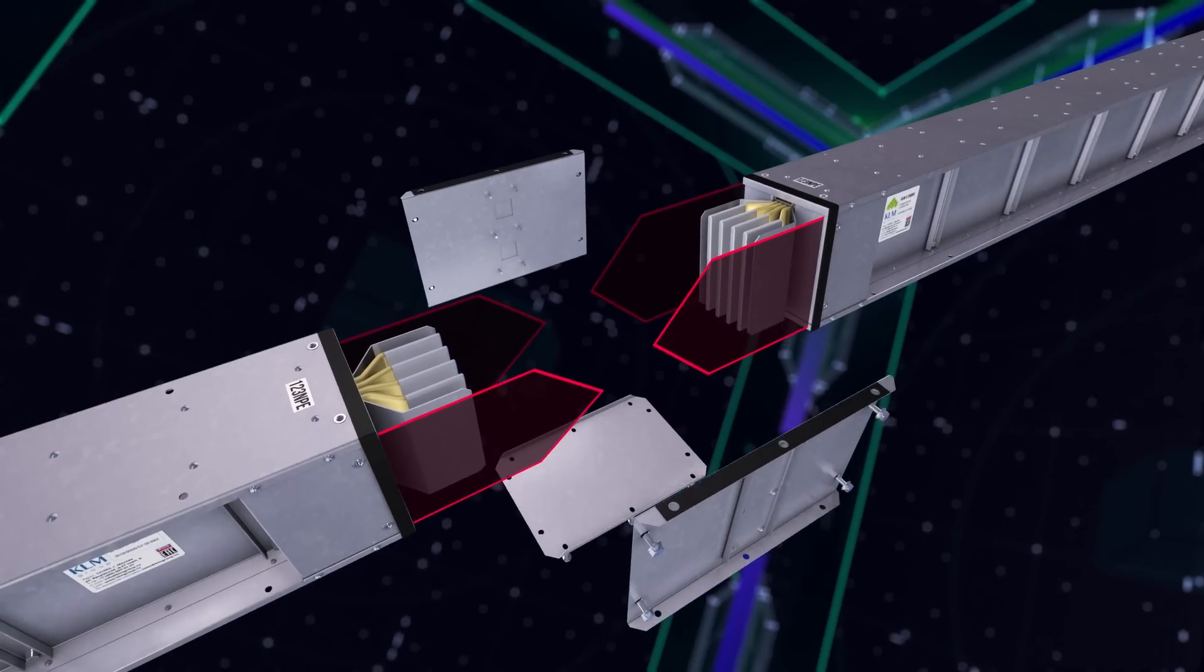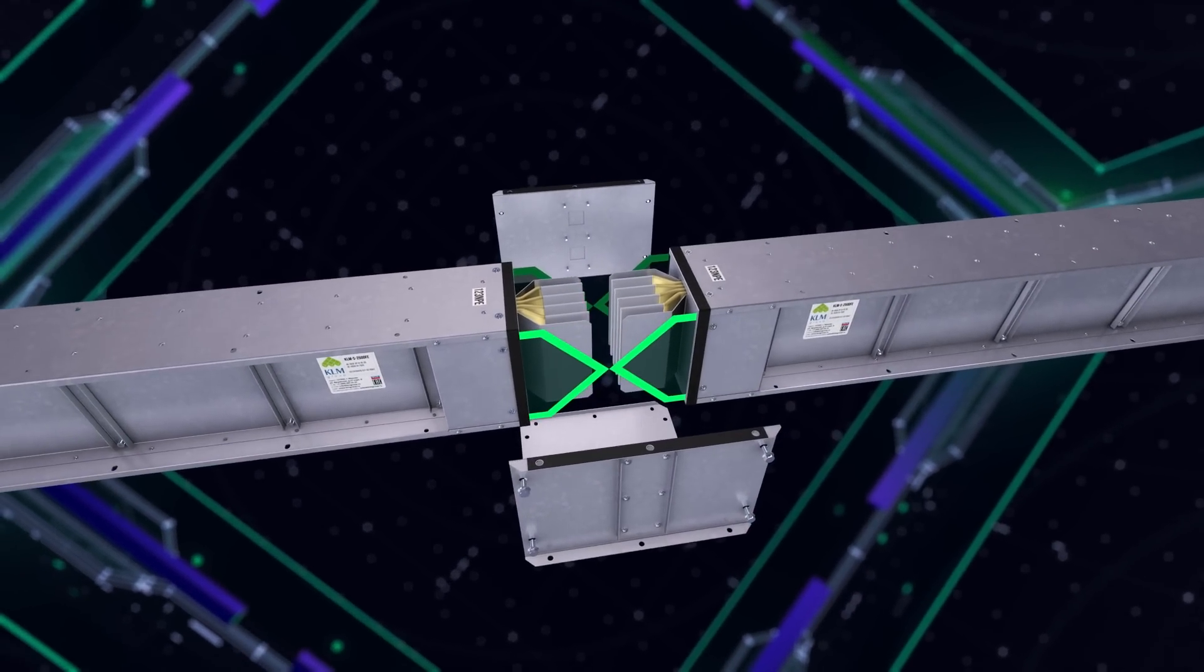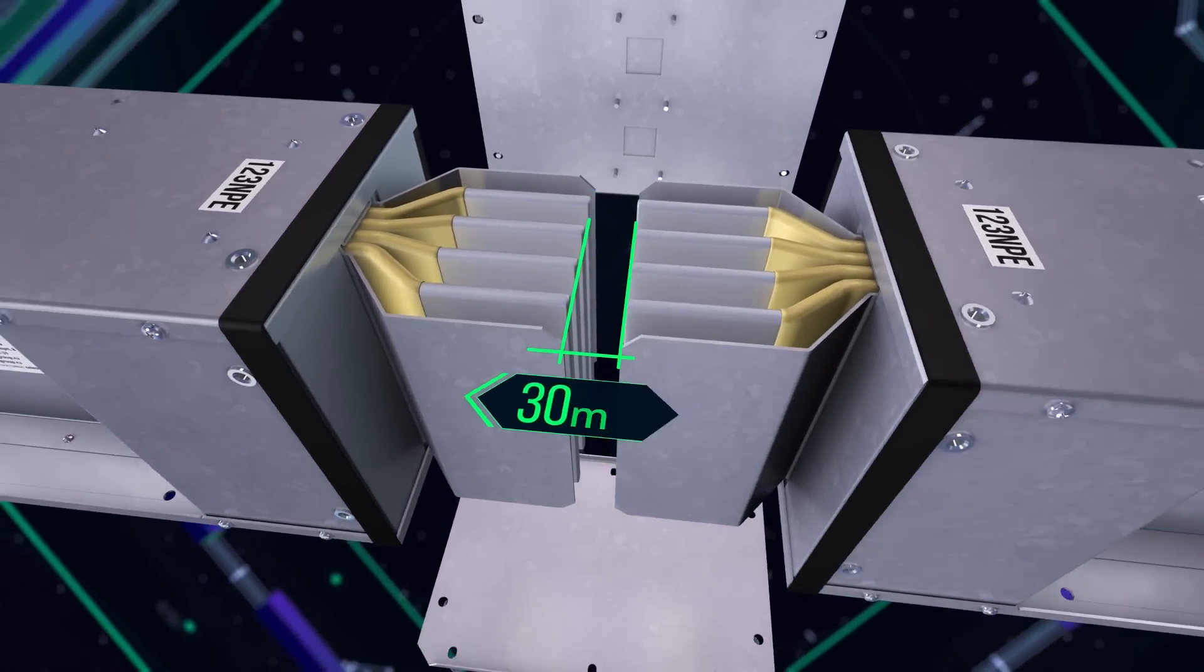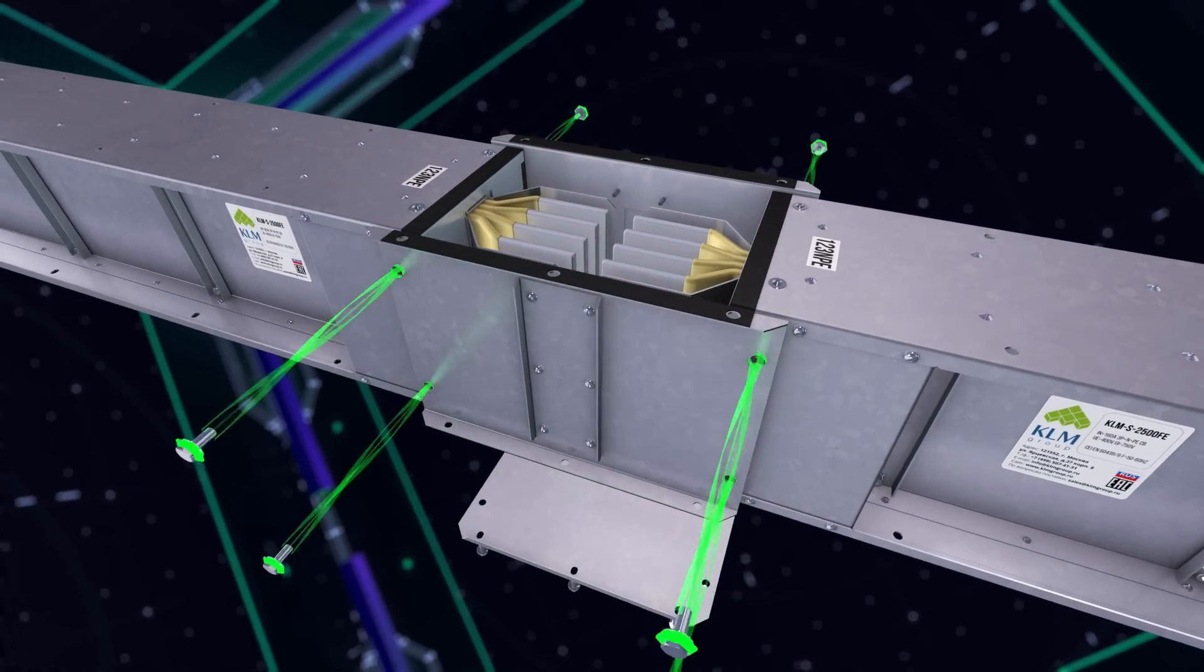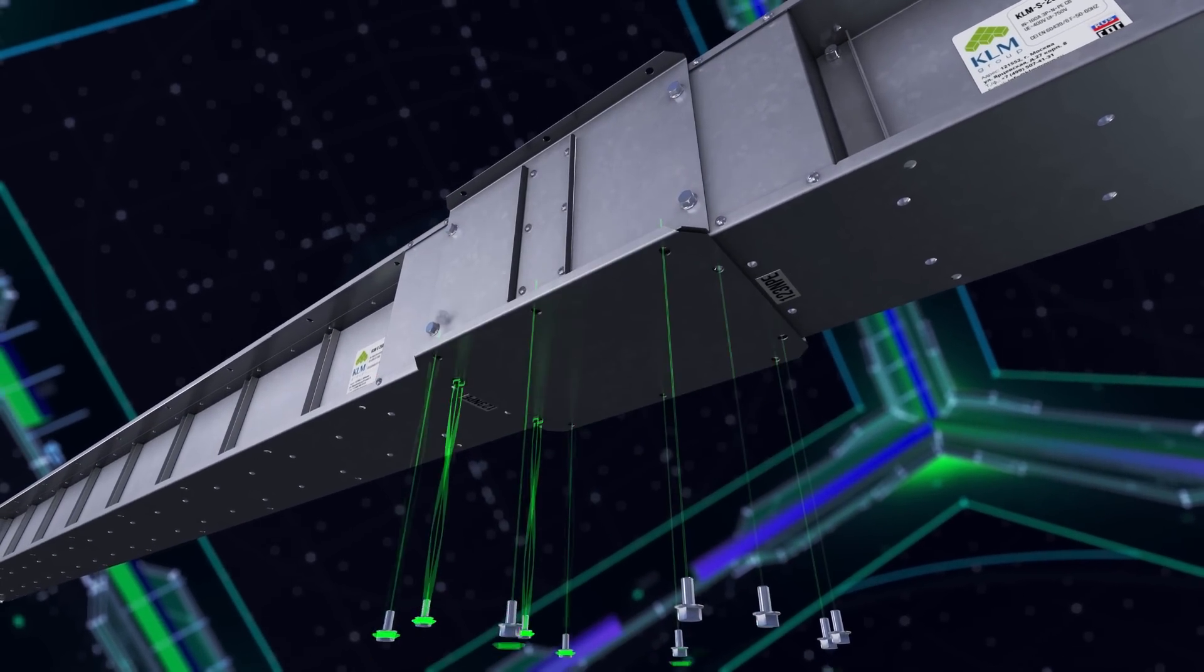When installing sections of the bus bar trunking system, make sure that the junction units are aligned. Position the ends of the current conducting buses 30 millimeters apart from each other. Attach the two side covers and one bottom cover of the junction unit using the bolted connections.